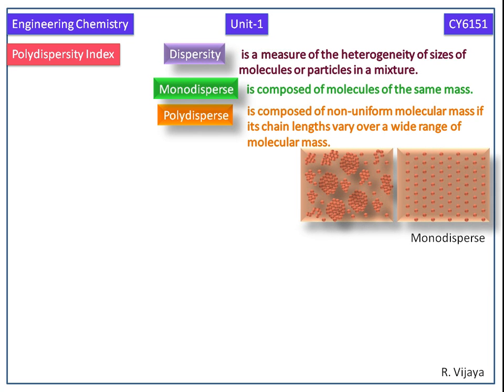This type of polymers have polydispersity. Now we define polydispersity index, i.e. PDI. The ratio of weight average molecular mass to number average molecular mass is known as polydispersity index.